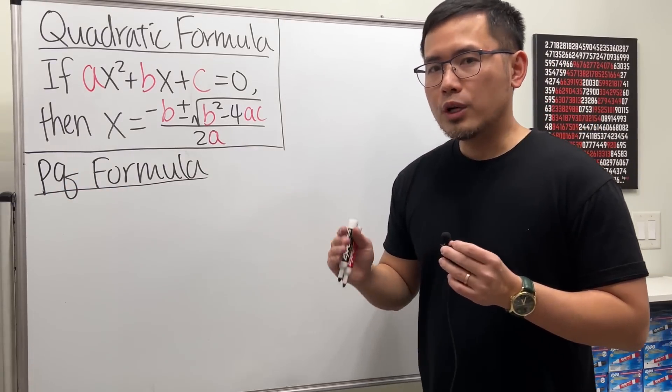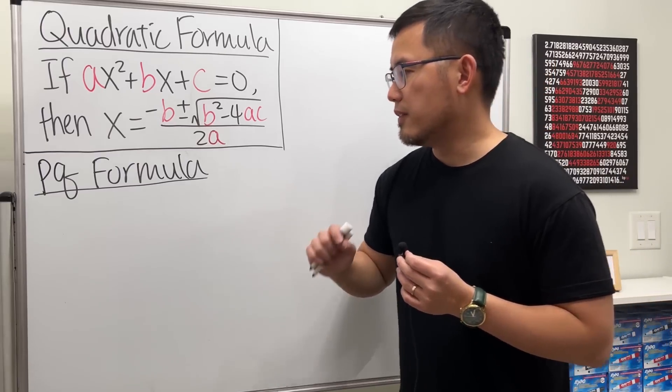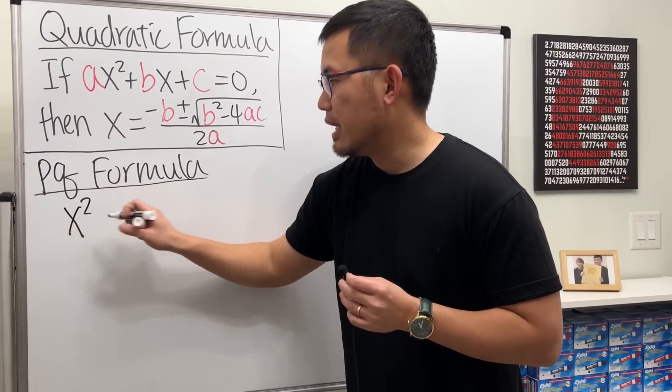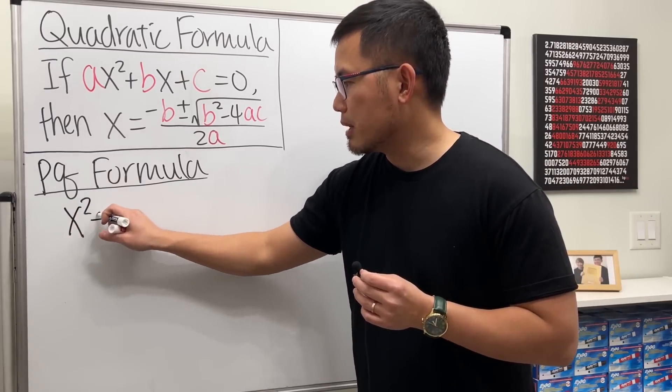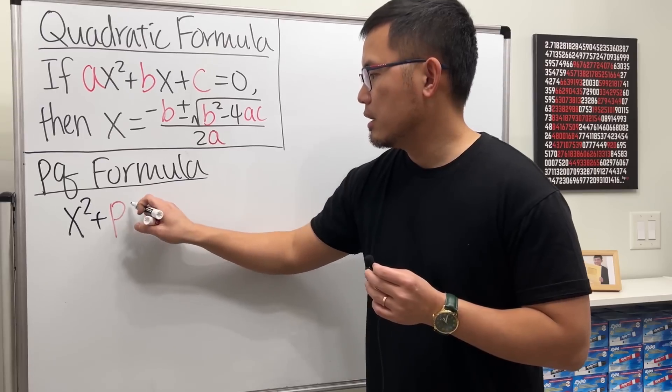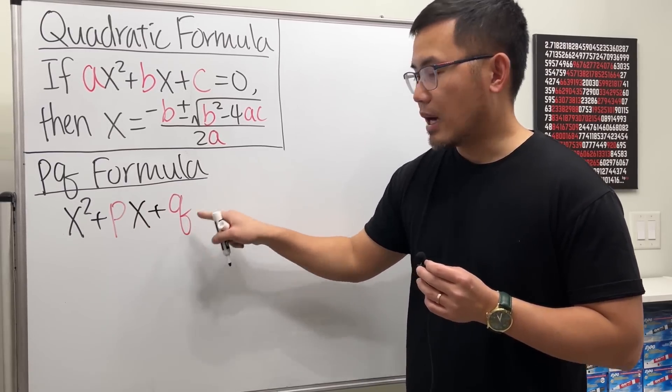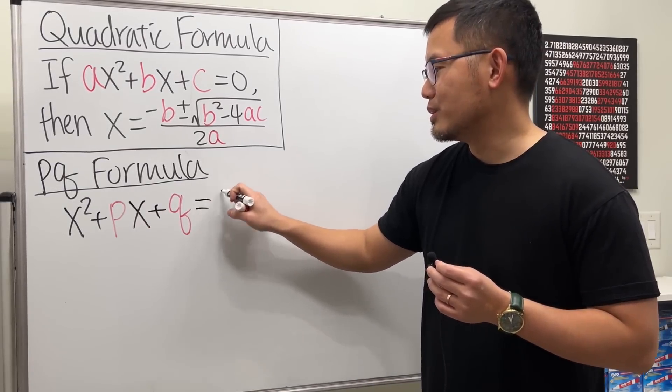For the PQ formula, we are trying to solve a quadratic equation in the following form. I want the a to be 1, so we just have x squared, and then we will have plus P times x, and then plus Q. And that's how you should write Q in math. And that's equal to 0.